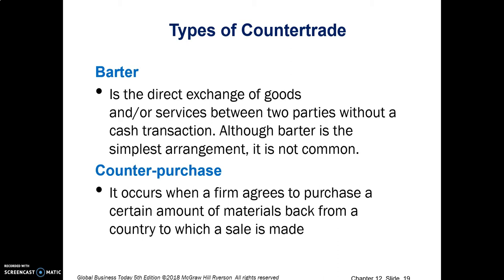The second type is a counterpurchase. It occurs when a firm agrees to purchase a certain amount of materials back from a country to which the sale is made — a reciprocal buying agreement. A firm uses some of the financial payment to buy products from a specified firm or for a specified product in that country. It helps the importing country maintain its foreign exchange reserves, among other reasons why it would want to engage in a counterpurchase.